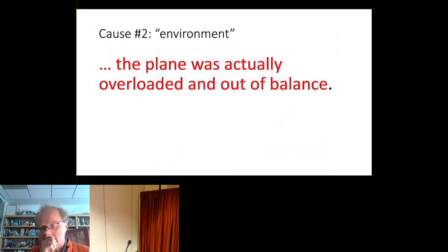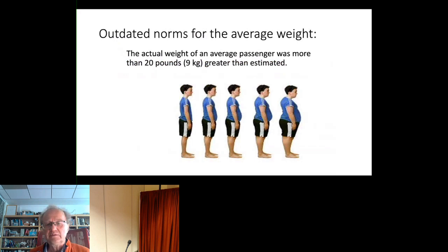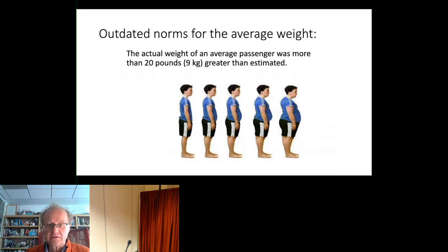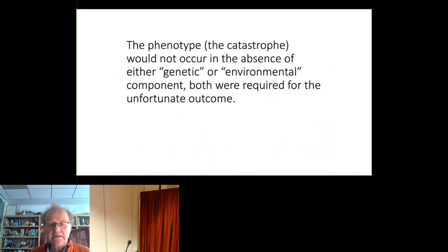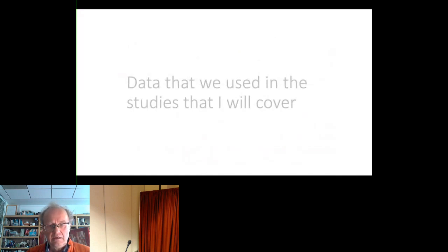There was also an environmental reason: the plane was overloaded and out of balance. They computed the weight by counting passengers and multiplying by the average passenger weight, but that average had been measured 20 years earlier. By this time the average American was approximately 9 kilograms or 20 pounds heavier, so the plane was overloaded and they didn't know. My point is that the catastrophe would not have occurred in the absence of either the genetic or environmental component — the plane was flyable by itself, but the combination resulted in the crash.